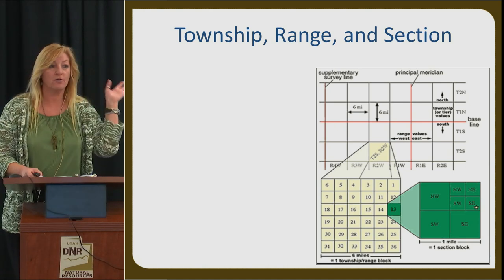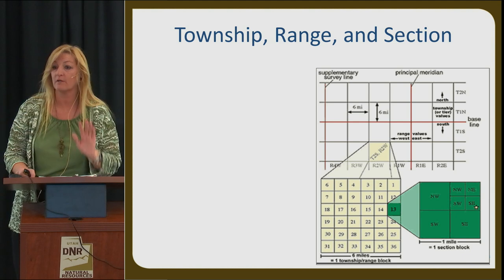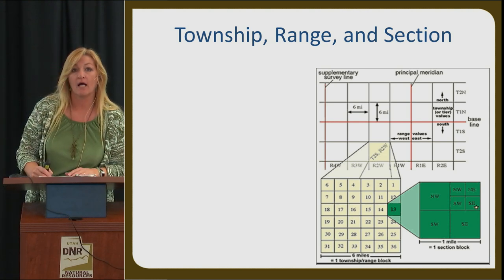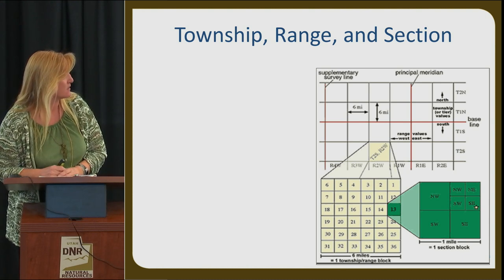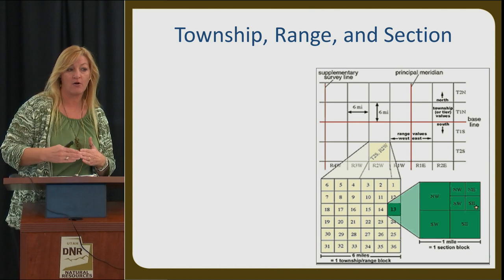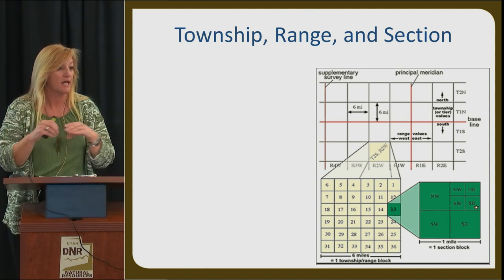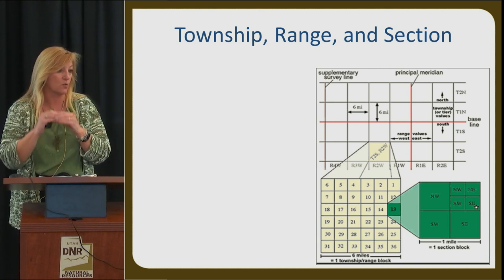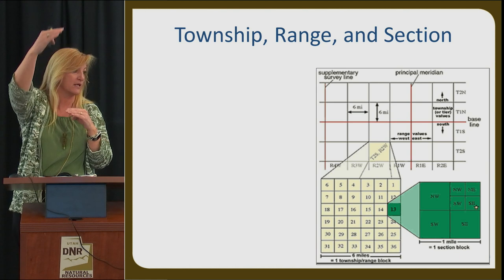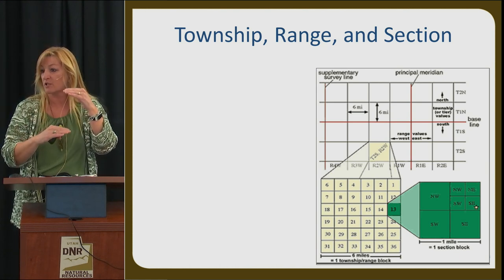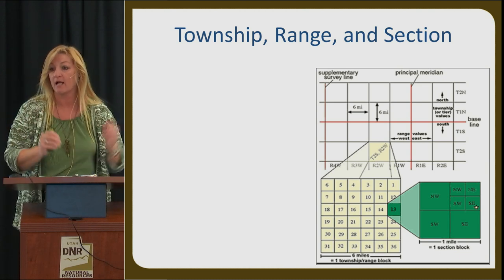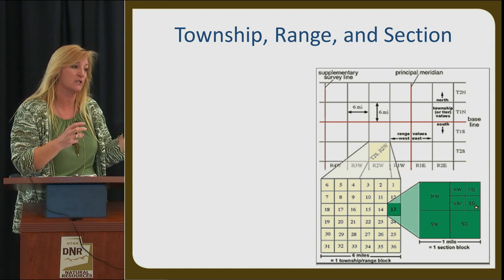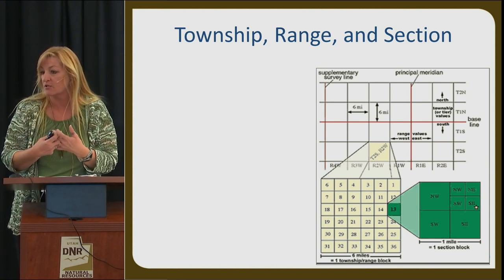Introduction to the public land survey system. Basically, the state is broken down into a grid. The township runs north and south, and the range runs east to west. There are two basin meridians in Utah, but we'll focus on the Salt Lake Basin Meridian, which starts at Temple Square. Going six miles north is Township 1 North, then 2 North, 3 North; going six miles south is Township 1 South, Township 2 South — and similarly for east and west. It's a six-mile grid. Typical township and ranges have 36 sections.